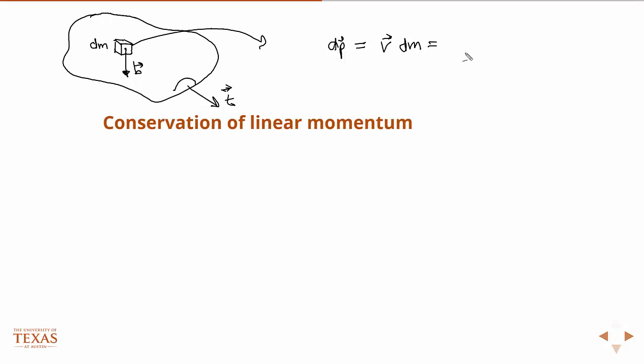Another way to write dm would be to write the density times the volume, times dv. If I know the density and the volume, I can get the mass.